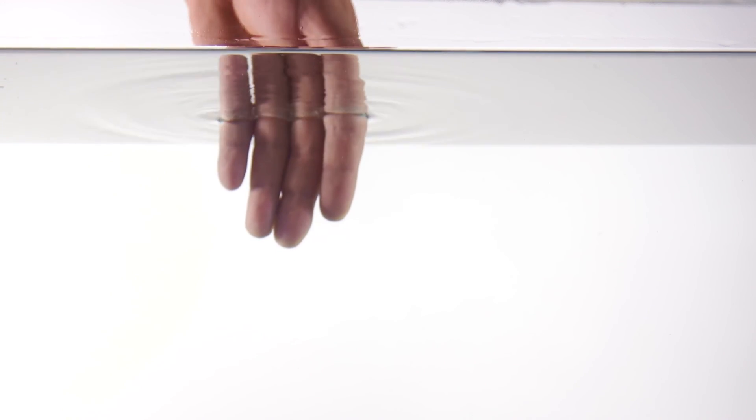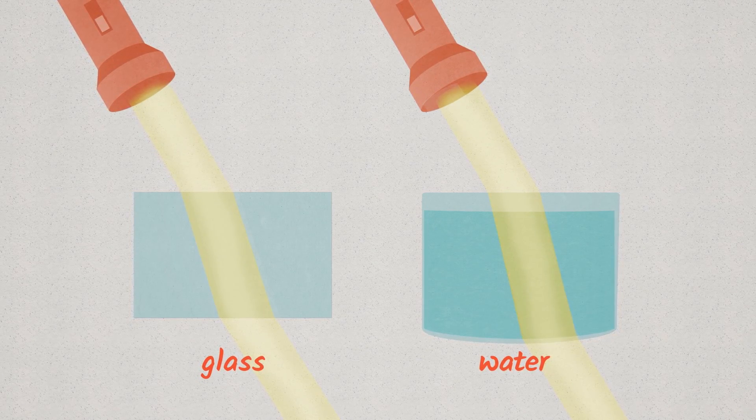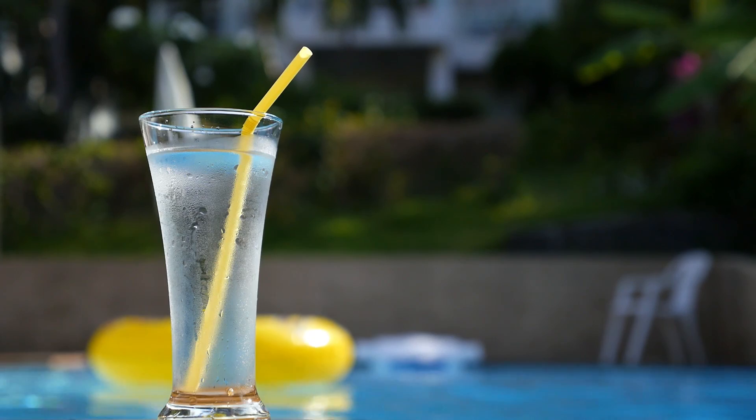When you put your finger in a glass of water, it looks like your finger is in a different place than it really is. When light bends, it's called refraction. And this doesn't just happen with water. Light will bend when it goes through all different things.